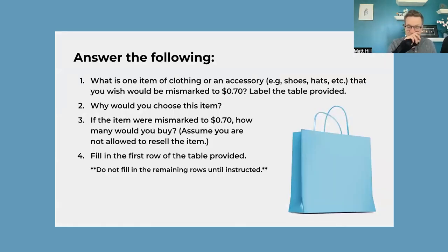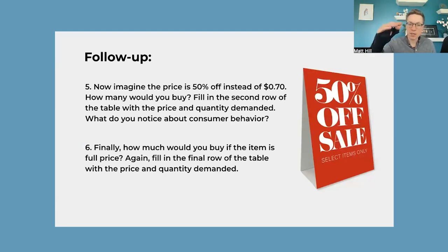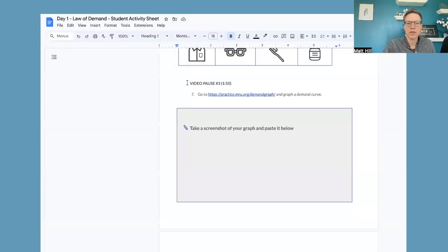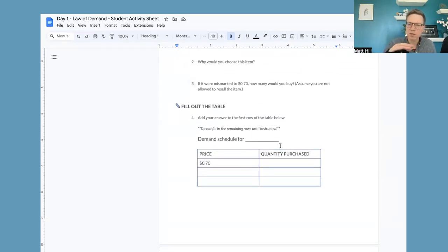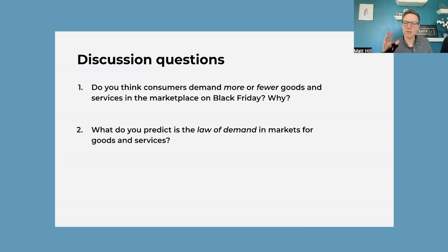Then we move into our first activity, which is getting students to fill out their own demand schedule. They have to think of an item they want or buy — if it was mispriced all the way down to 70 cents, how much would they buy? You have to say they can't resell the item and it can't be gift cards — you want a clean answer as to, if you had to use these yourselves, how much would you buy? If it was 50% off, how much would you buy? If it was full price, how much would you buy? Referencing the student activity sheet, they're basically filling in a simple demand schedule that should show at a lower price they want to buy more, and at full price they would buy less. You're setting it up for themselves and then getting some discussion questions going to hammer home this relationship.